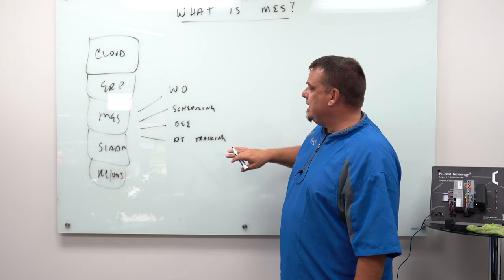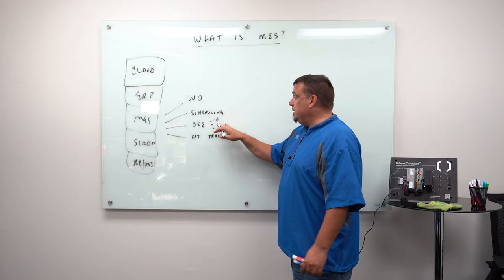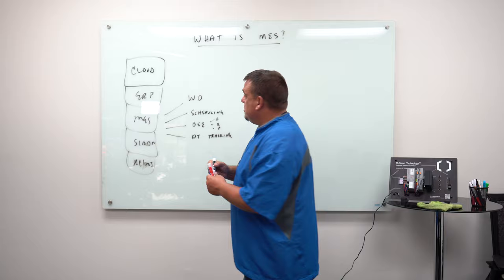OEE is A, Q, P: availability, quality, and performance. And it helps us narrow down why is it we're not producing what we want to produce. So at a high level, that's MES.